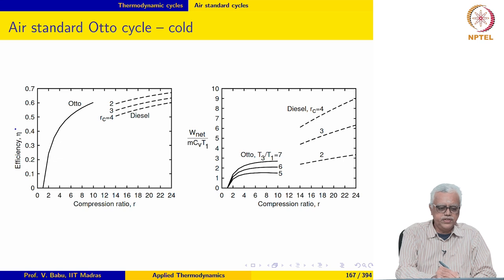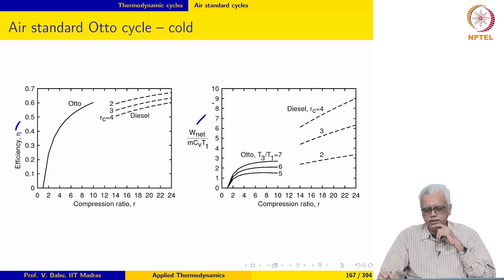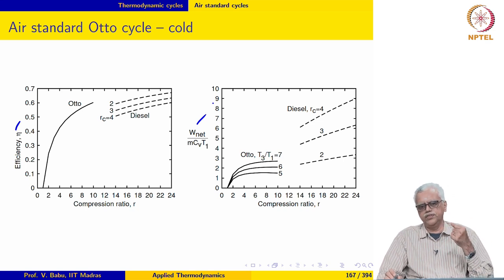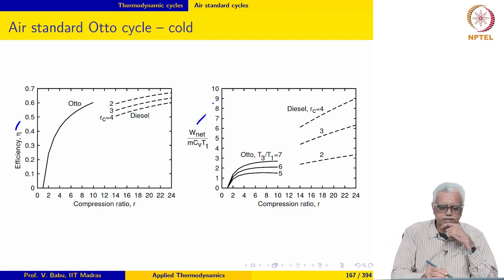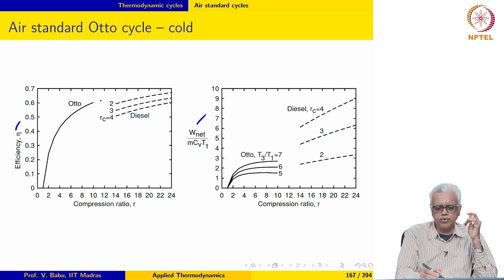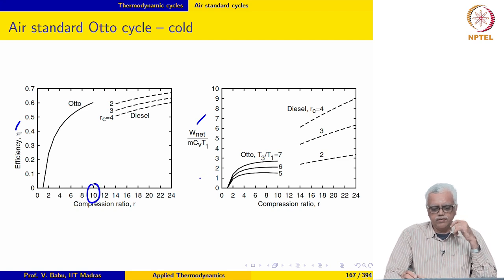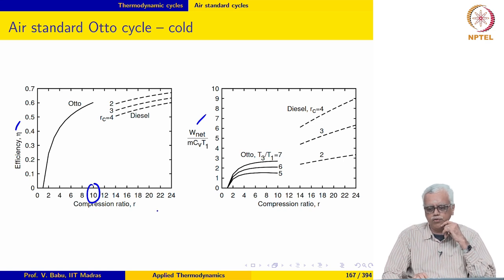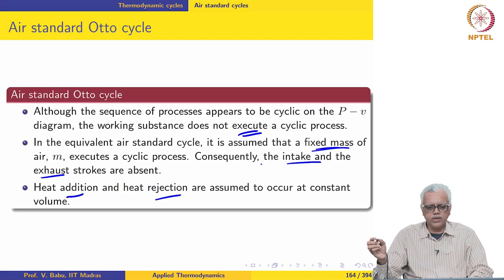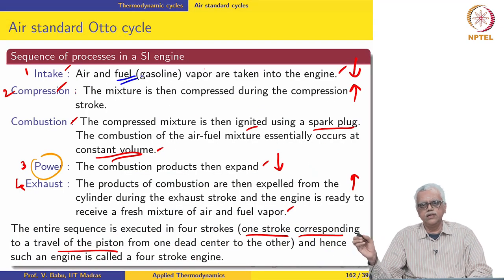Both efficiency and specific work are plotted against compression ratio. The performance metrics of the Otto cycle are specific power, first law efficiency, and second law efficiency. The efficiency depends only on compression ratio and tapers off after about 10. Spark ignition engines typically do not operate at compression ratios higher than 10, and the reason for that naturally arises.